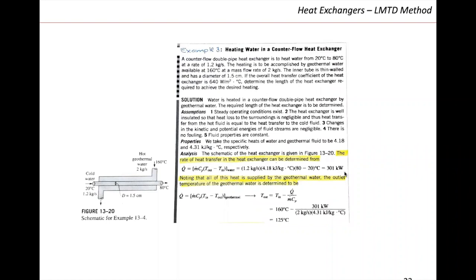Now that we know the heat supplied by the geothermal water, we can get the outlet temperature for the geothermal water. We apply the energy balance to the geothermal current — what we don't know is T_out. We plug in the heat transfer rate from the other current, because whatever the hot current loses, the cold stream gains. We get the outlet temperature for the geothermal water being 125°C.